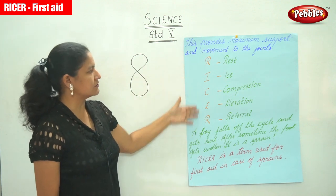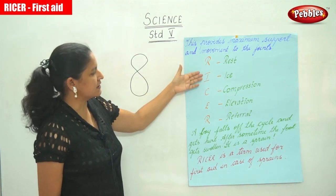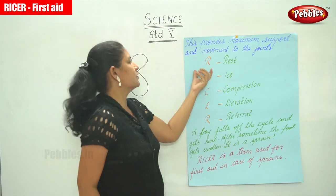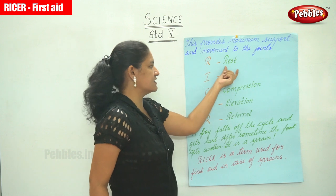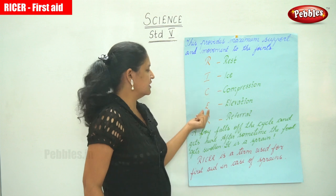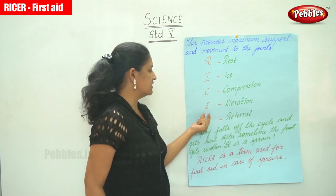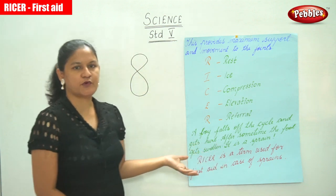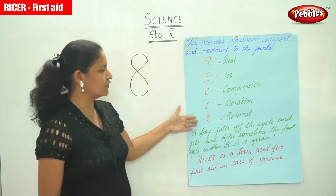Next we are going to talk about RICER, R-I-C-E-R. R is for rest, I is for ice, C is for compression, E is for elevation, and R is for referral. In case of sprain we need to follow this.